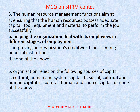Question number 5. The human resource management functions — Option A. Ensuring that the human resources possess adequate capital, tool, equipment, and material to perform the job successfully. Option B. Helping the organization deal with its employees in different stages of employment. C. Improving an organization's credit worthiness among financial institutions. D. None of the above. Correct answer is B. Helping the organization deal with its employees in different stages of employment. The correct questions are highlighted here so that it takes no time for you to revise these.